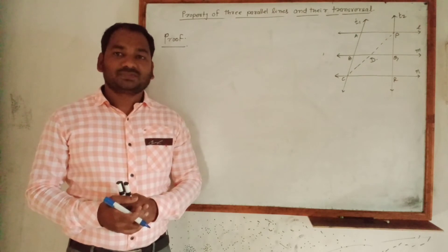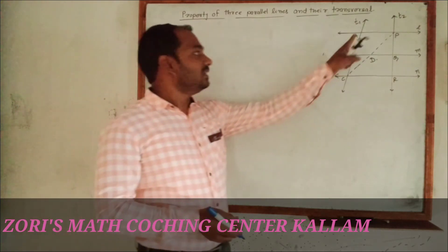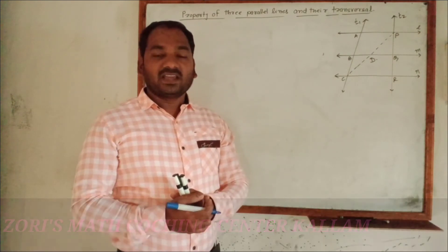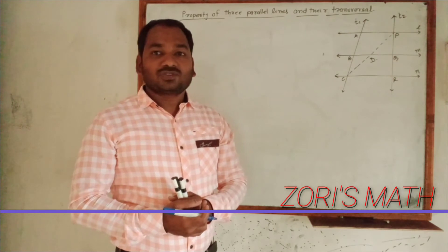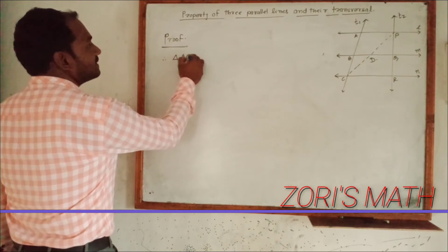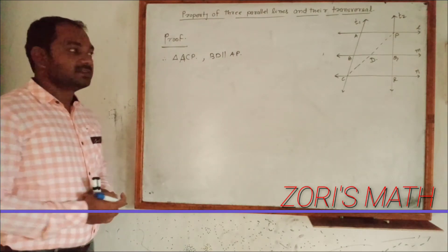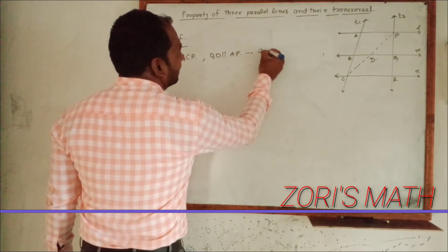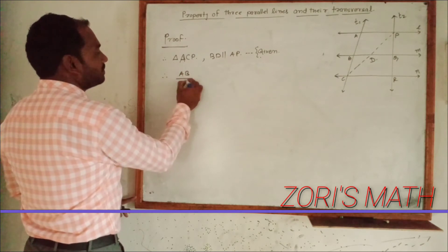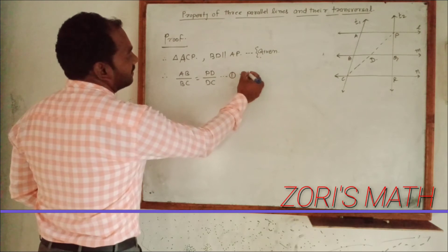Now look at the proof of the property. In the first diagram, in triangle ACP, BD is parallel to AB. Therefore we can use the Basic Proportionality Theorem (BPT). So in triangle ACP, BD parallel to AB — reason: given. Therefore AB upon BC is equal to PD upon DC. This is equation 1; reason: Basic Proportionality Theorem.